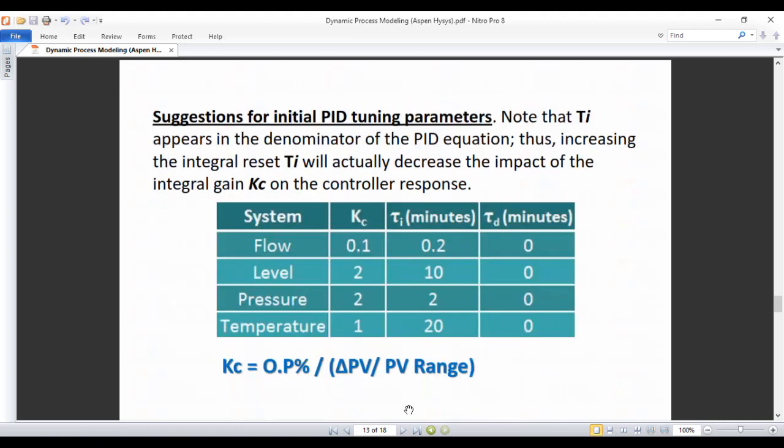Suggestions for initial PID tuning parameter. If you are a beginner, so this is a guidance to set up the tuning parameter. Note that the Ti appear in the denominator of the PID equation. Increasing the integral reset Ti will actually decrease the impact of the integral gain Kc on the controller response. The basic equation for Kc is output percentage of the controller over the difference between the process variables over the process variable range. So these are initial settings for flow, level, pressure and temperature.